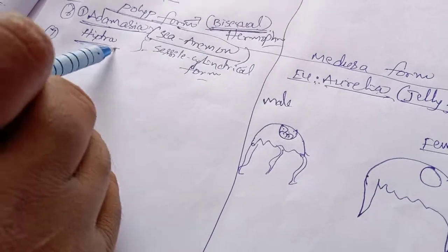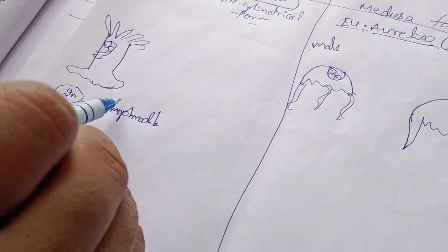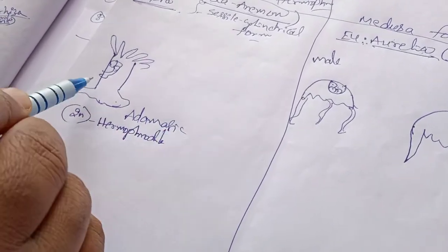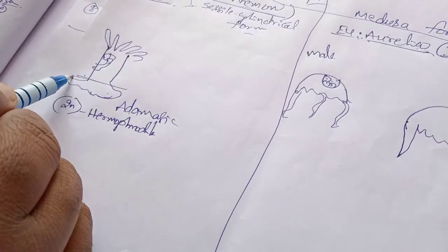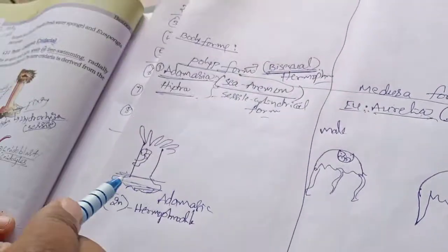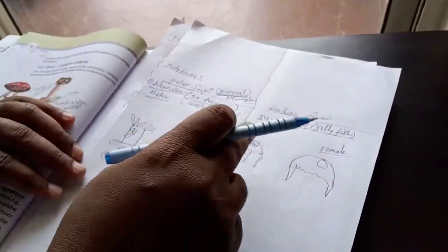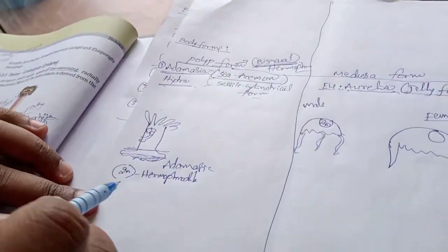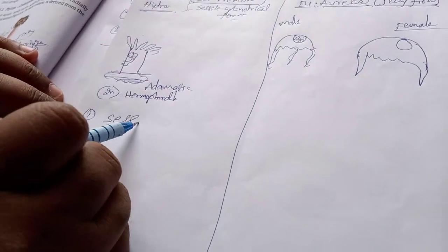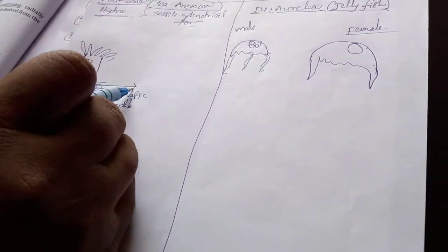Adamecia appears like this — they are sac-like. This is a polyp body form. The main difference between polyp and medusa: polyp is a sac-like form, they are attached somewhere and they are not movable.